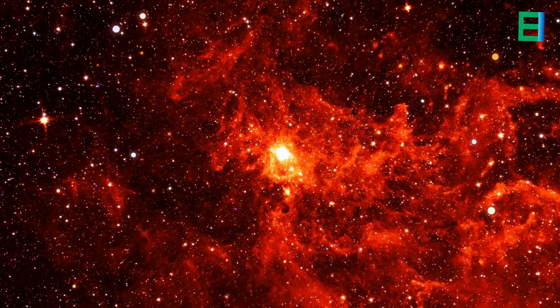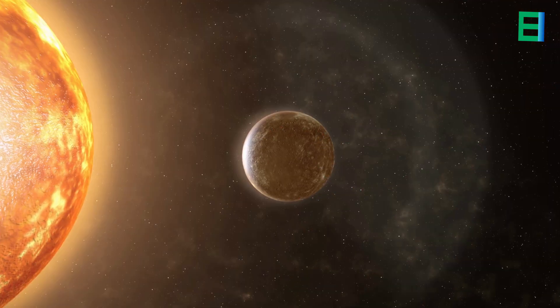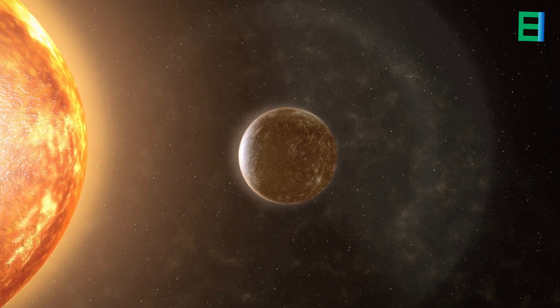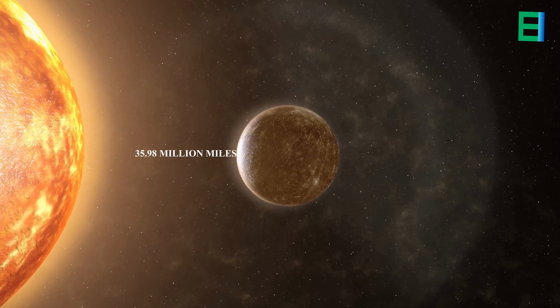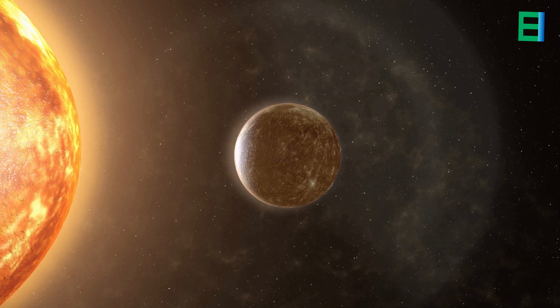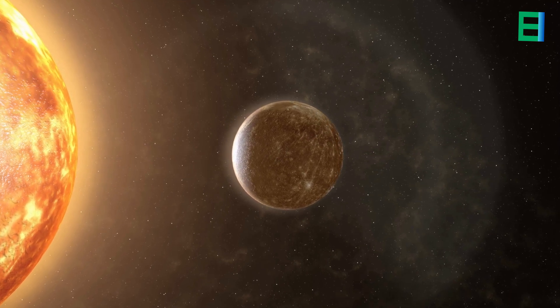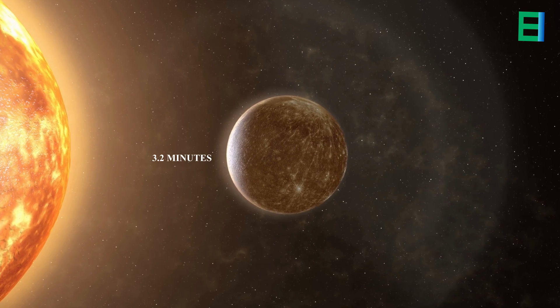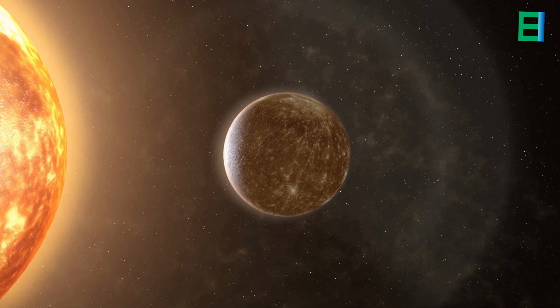Mercury, positioned as the planet closest to the sun, maintains a proximity of approximately 35.98 million miles. The swift journey of sunlight from the sun to Mercury takes a mere 3.2 minutes.